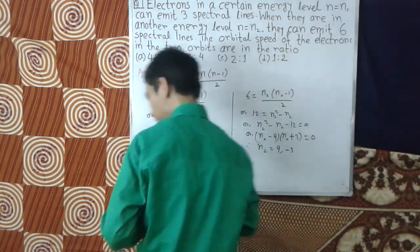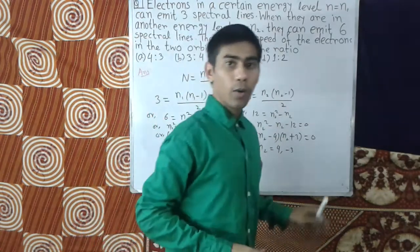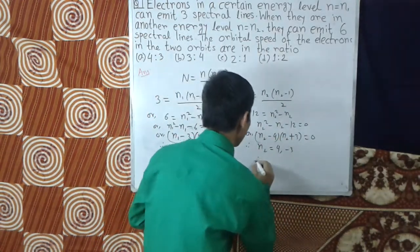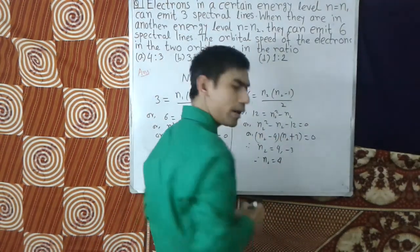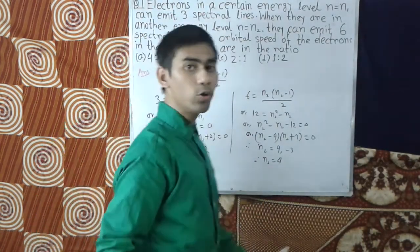Here we take positive root only, hence n2 = 4. So we get n1 = 3 and n2 = 4.